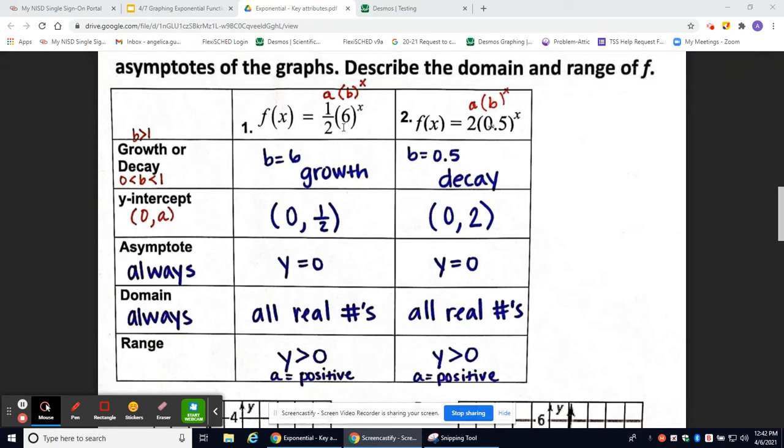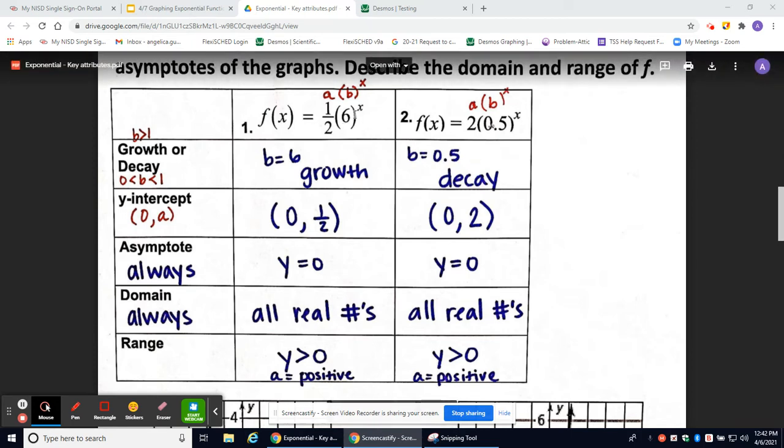if you're having difficulty identifying growth or decay just by looking at the equation, remember: if b is between 0 and 1, it is decay. If b is greater than 1, it's growth.